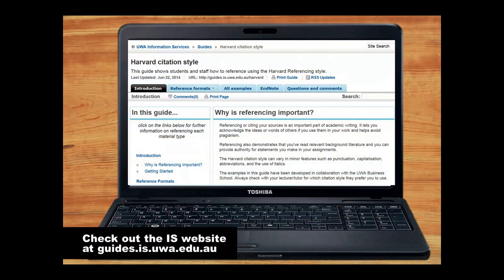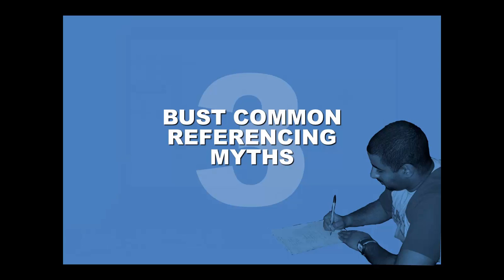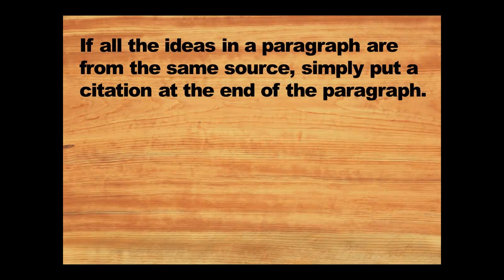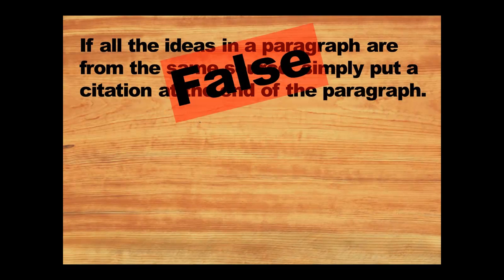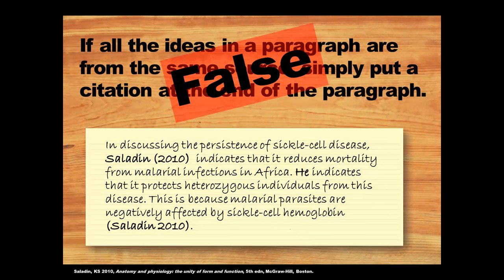For more examples, please check out the UWA Harvard Citation Guide on the Information Services website — it gives you more information on in-text citations and references and shows you examples of how to format these correctly. Now let's look at five common perceptions about referencing and see if we can bust any myths. The first one is that if all of the ideas in a paragraph come from the same source, you can simply put an in-text citation at the end of the paragraph. This is false.